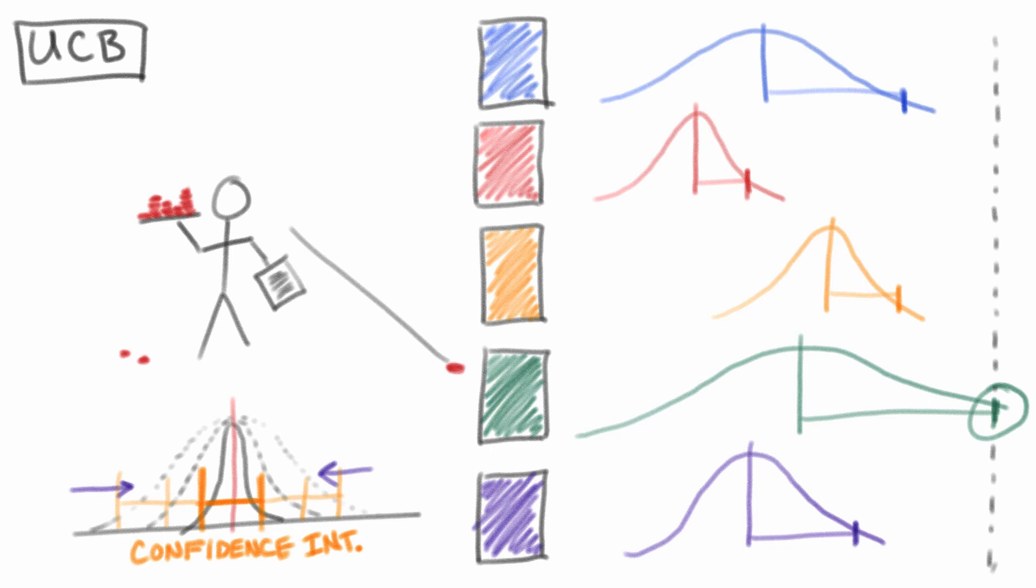With UCB, exploration and exploitation are achieved at the same time, and principles of sampling statistics will dictate when one option is due for further review as the confidence intervals of frequently chosen options shrink.